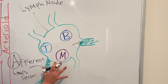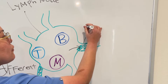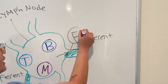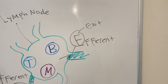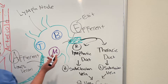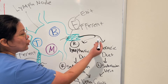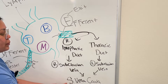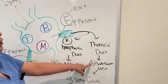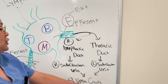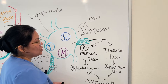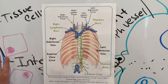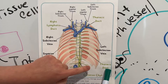Once the lymph fluid has been filtered and cleaned in your lymph nodes, it exits via your efferent lymph vessel — efferent with an E, think E for exit. So A is going in and E is exiting. Lymphatic fluid will either end up in your right lymphatic duct or your thoracic duct. Your right lymphatic duct leads to your right subclavian vein, which empties out into your superior vena cava. Your thoracic duct leads to your left subclavian vein, which also empties into your superior vena cava.